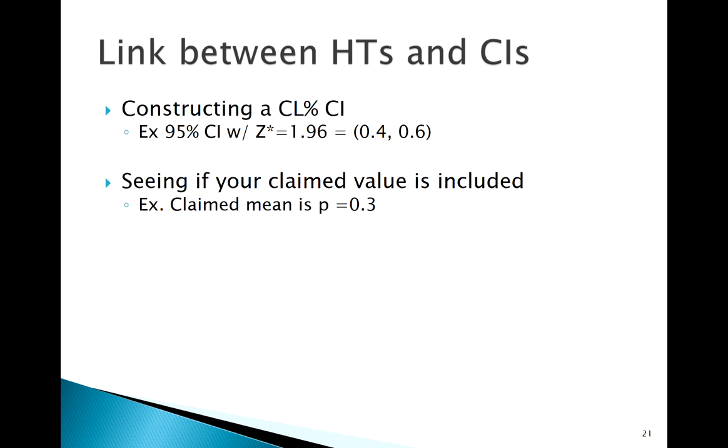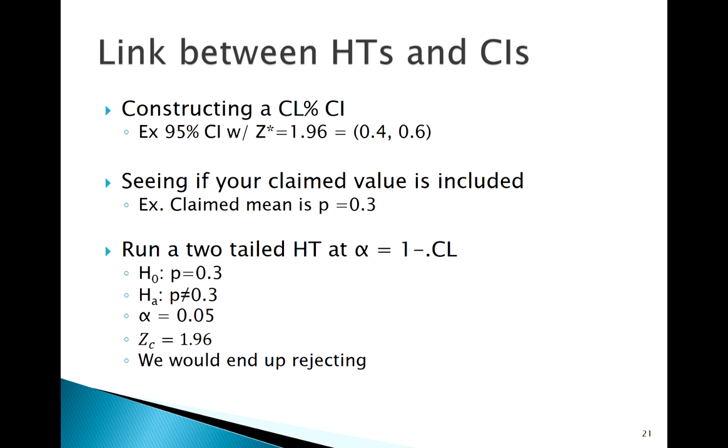Imagine running a two-tailed hypothesis test with your alpha equal to 1 minus your confidence level. A two-tailed hypothesis test in this case would look like this: say p = 0.3 (claim value), two-tailed, alpha would be 0.05. I divide alpha by 2, look up my critical value - the critical value there would also be 1.96. If we had the data and did the math, you'd find that we end up rejecting.